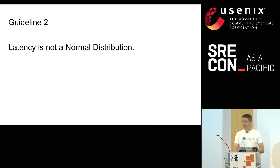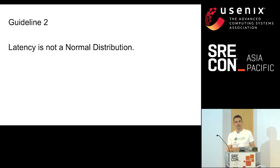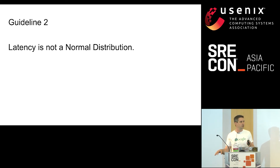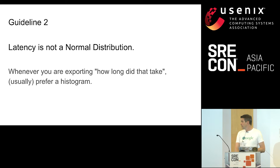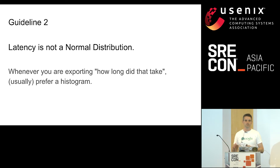Guideline two: latency is not a normal distribution. This is probably the most important one because everybody always measures mean latencies, and that is never useful. Even when latency normally is a normal distribution, the time you care about it is when something happens that makes it not normal anymore. At that point your mean is no longer a meaningful number. Whenever you're exporting the concept of how long did it take, prefer a histogram.